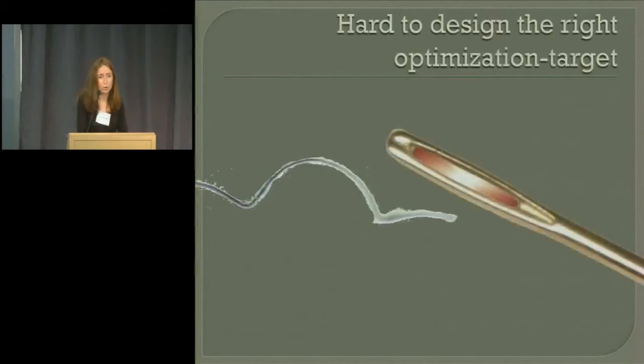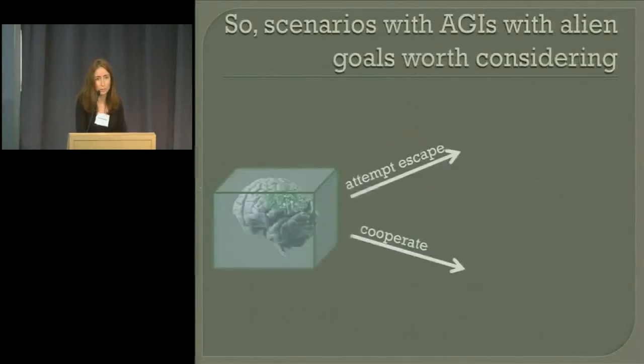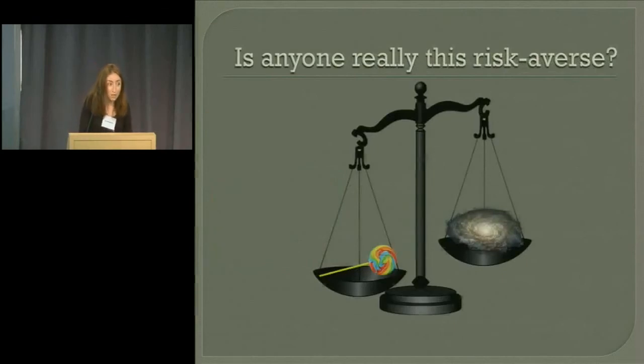Actually, it looks fairly plausible. It looks plausible because it's hard to design the right optimization target. And so scenarios with AGIs with alien goals seem to be worth considering. There's a lot more to say about this, but it didn't fit in the 10 minutes. But there has been analysis. I'm not randomly being anthropomorphic. Second question about plausibility, is anyone really this risk-averse?